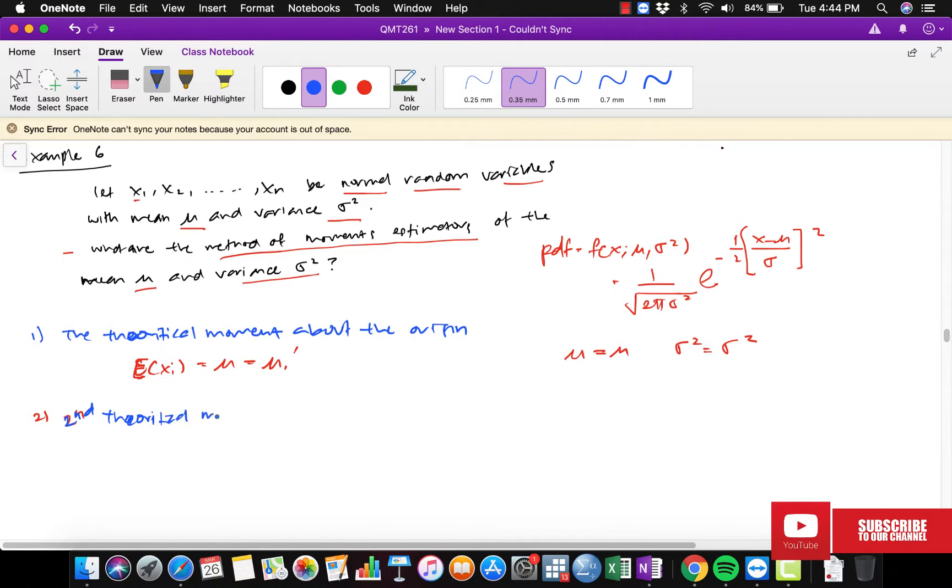The expected value of Xi, which is equal to mu, equals mu1 prime. We know this from prior knowledge—we need to integrate. And the second one is the second theoretical moment about the mean, which is the variance.